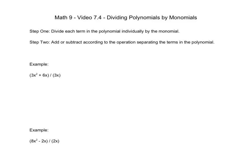So we'll do a few examples, and you'll see what we mean. So first example, 3x squared plus 6x, all divided by 3x. So step one says we're going to divide each term. So 3x squared is a term, 6x is a term. We're going to divide each of them separately by the 3x. So 3x squared divided by 3x, and the other one is going to be 6x divided by 3x.